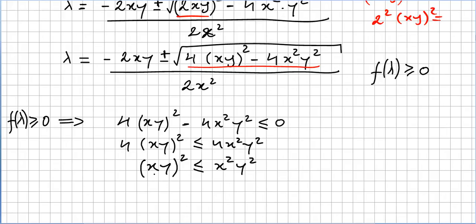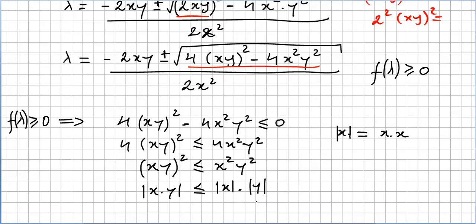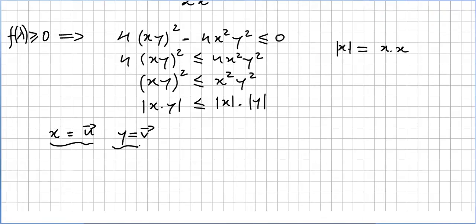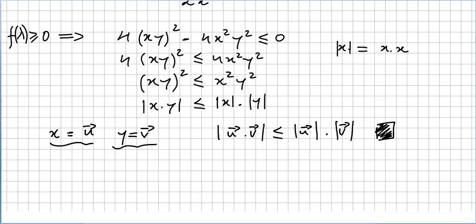Since x and y are vectors, x·y is the inner product and ‖x‖² = x·x. So we have |x·y| ≤ ‖x‖·‖y‖. Since at the beginning we defined x = u/||u|| and y = v/||v||, we can conclude that u·v ≤ ‖u‖·‖v‖, and this concludes the proof of the Cauchy-Schwarz inequality.